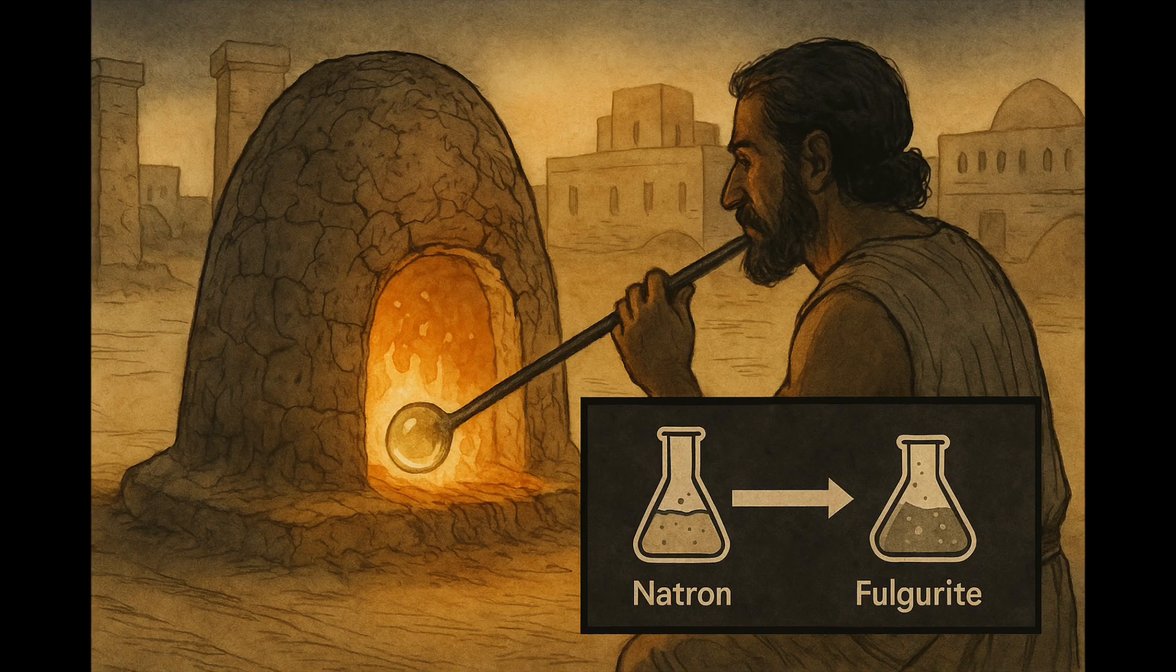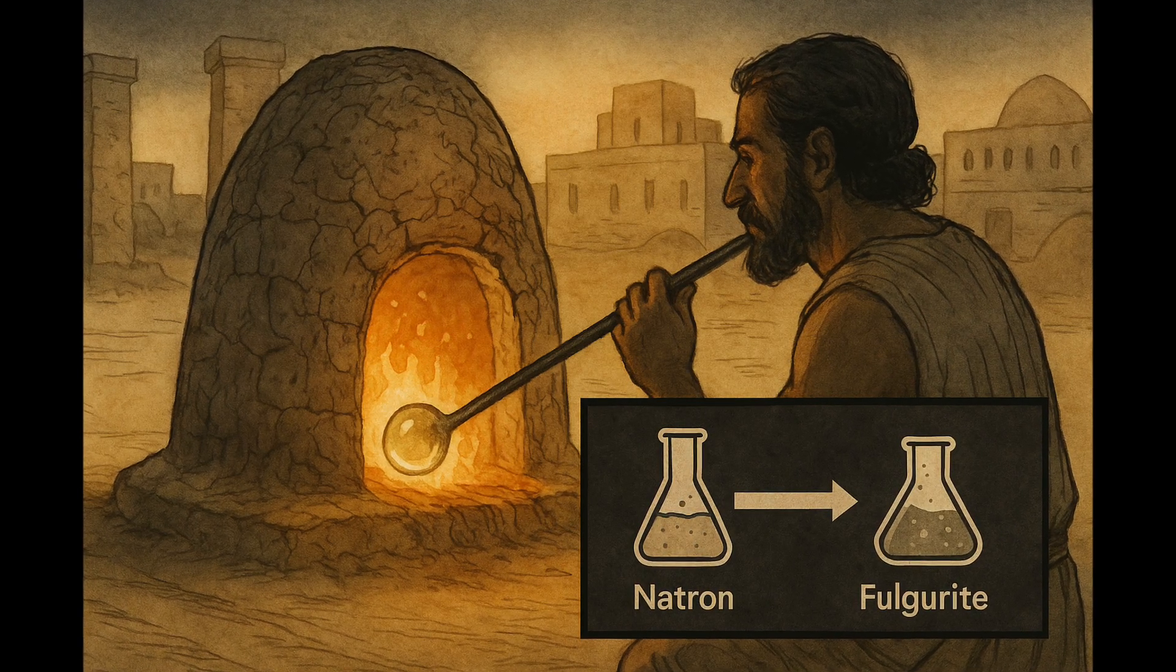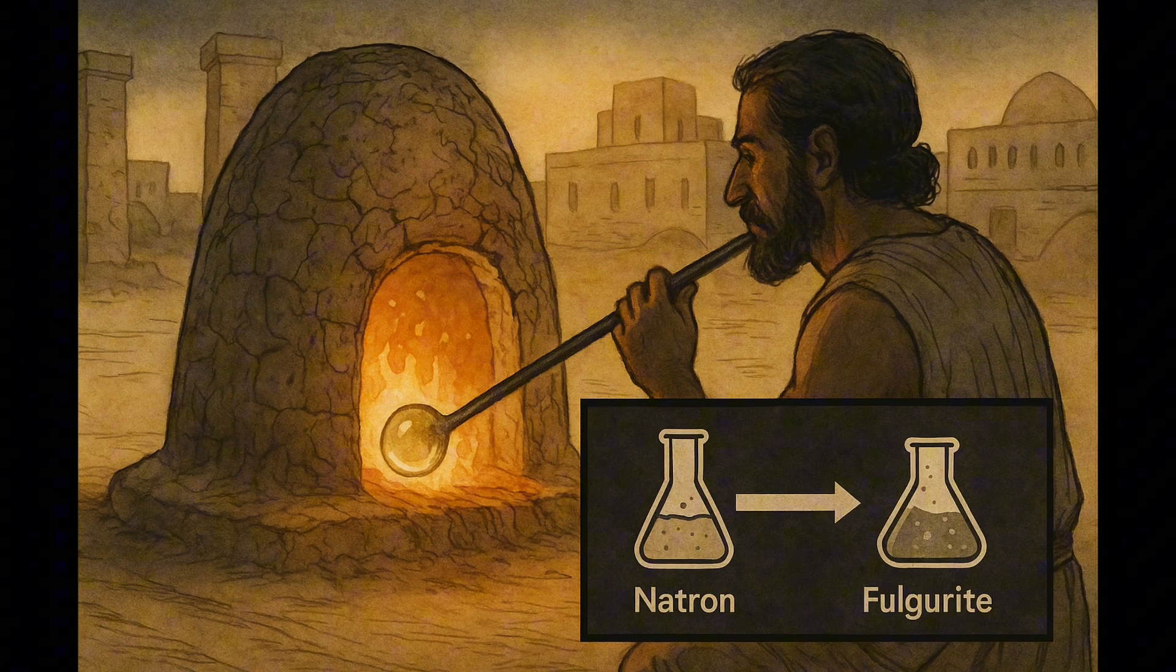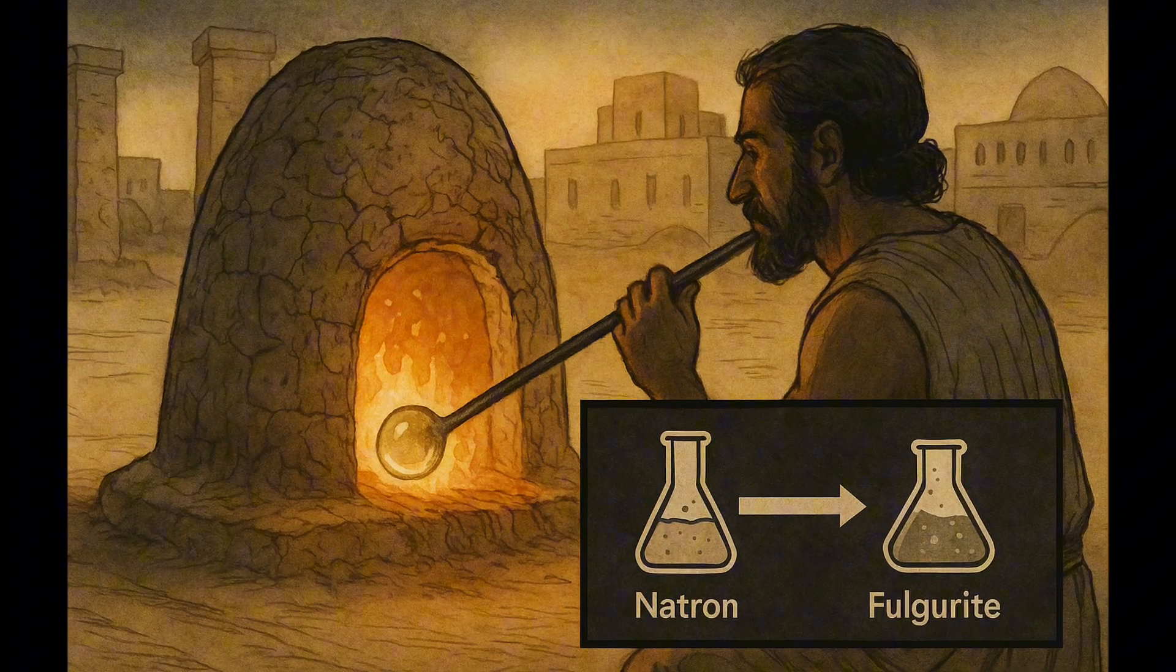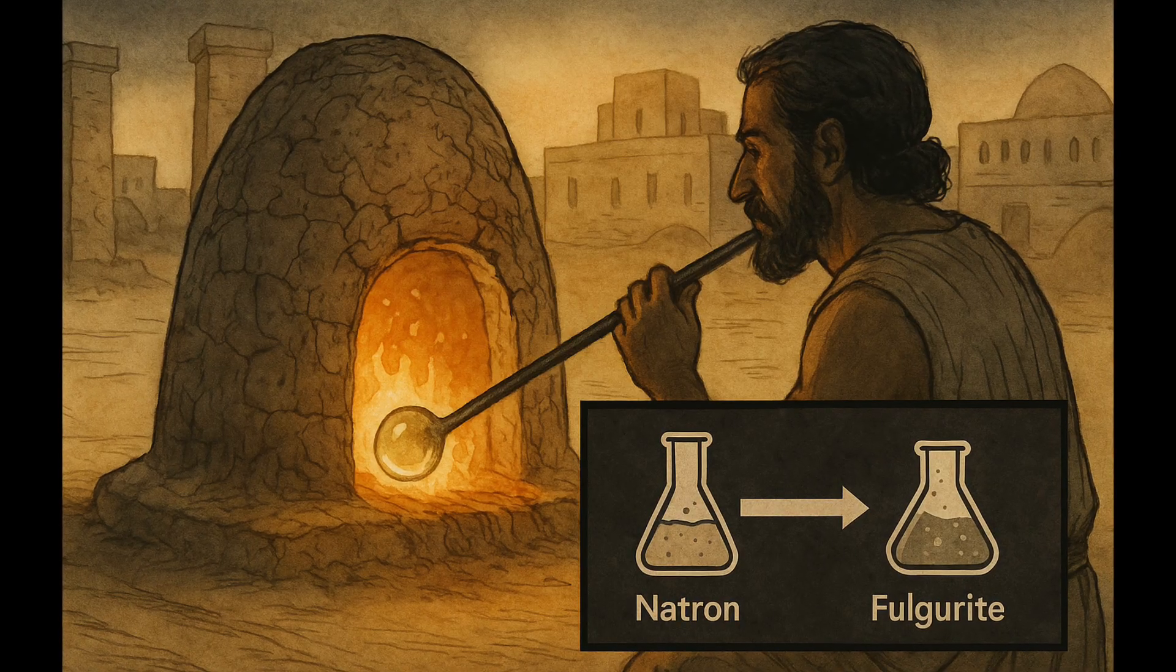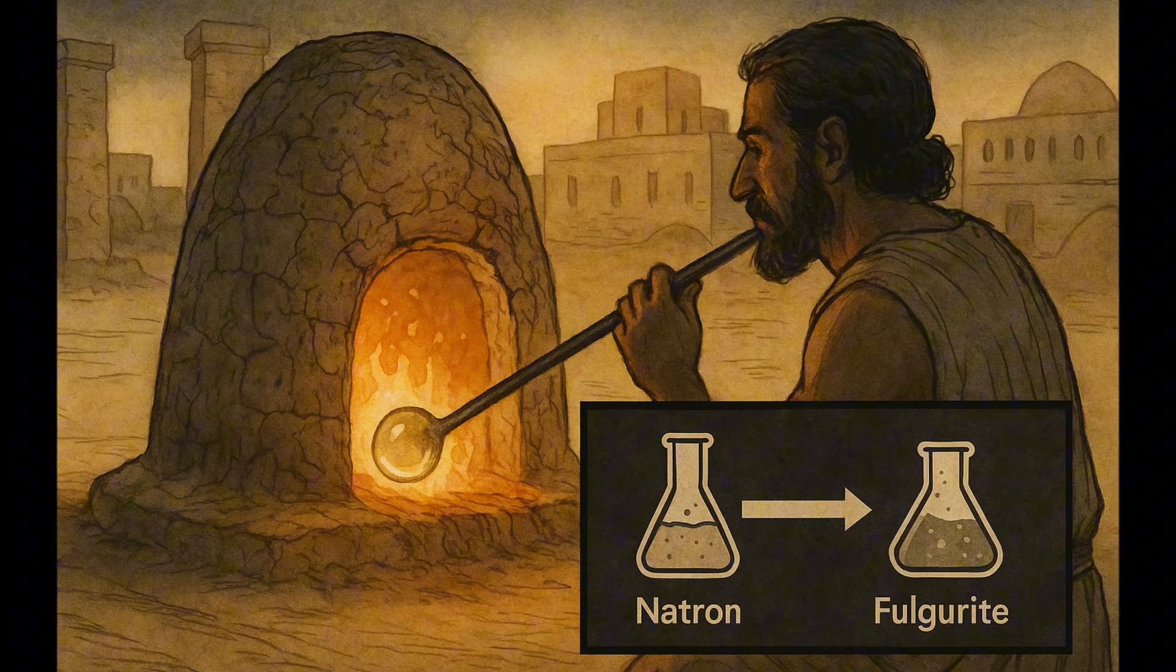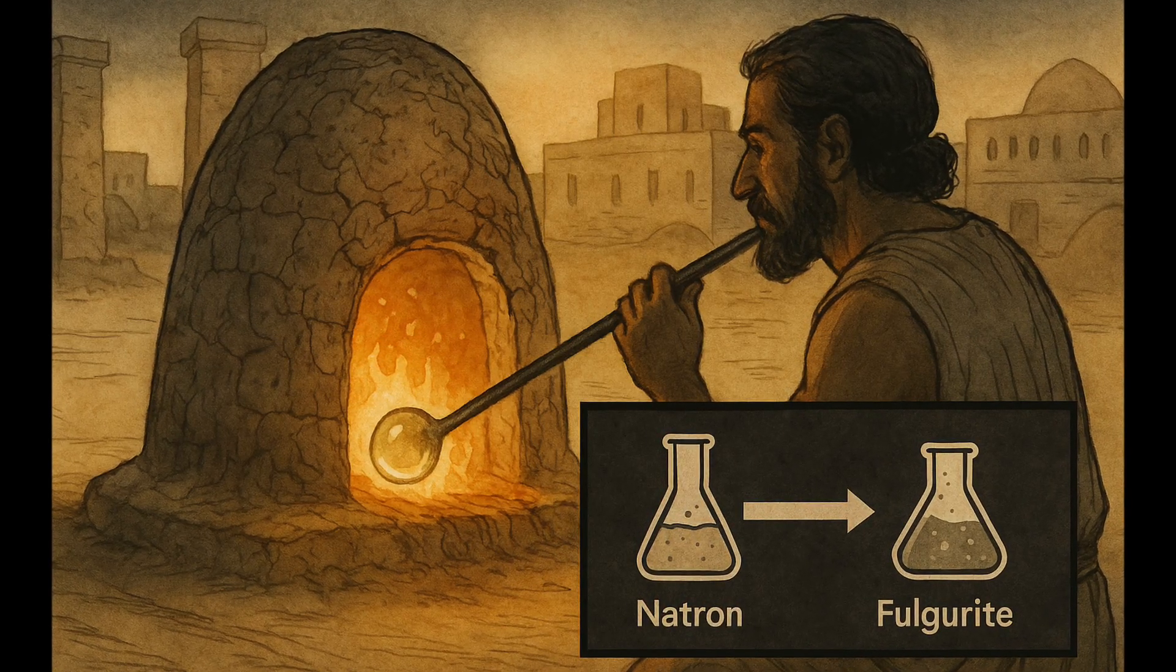The earliest known glassmaking dates back over 4000 years to ancient Mesopotamia and Egypt. These civilizations built clay furnaces capable of reaching high temperatures, and they refined the mixture of silica, plant ash, and limestone into something workable.